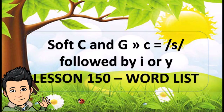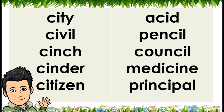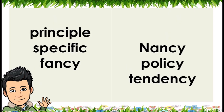Lesson 150, Word List: Soft C and G, C equals /S/ followed by I or Y. City, Civil, Cinch, Cinder, Citizen, Acid, Pencil, Counsel, Medicine, Principal, Specific, Fancy, Nancy, Policy, Tendency.